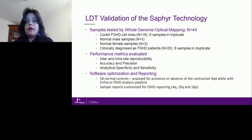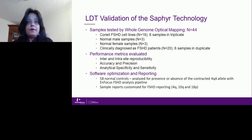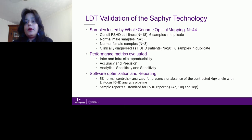The total number of samples tested by whole genome optical mapping was 44. Six were Coriell FSHD-positive cell lines run in triplicate in three independent runs. We also had three normal male and three normal female samples, and 14 clinically diagnosed FSHD patients — six of those run in duplicate. We measured the performance metrics described, and 58 normal controls were analyzed for the presence or absence of the contracted 4QA allele using the nFocus FSHD analysis pipeline. Reports were customized for the 4q, 10q, and 18p regions.